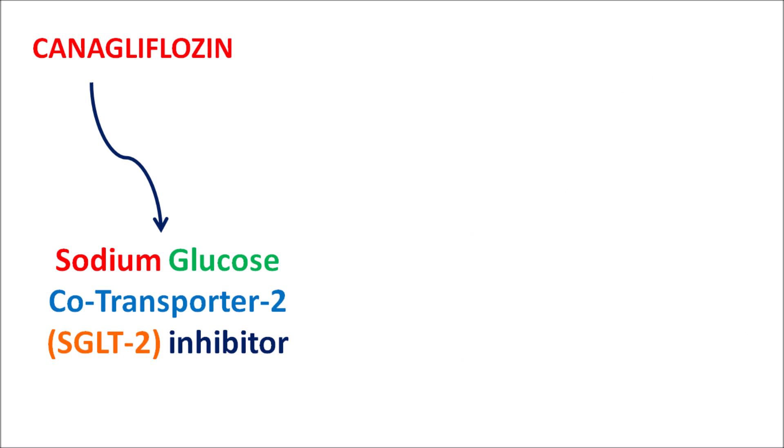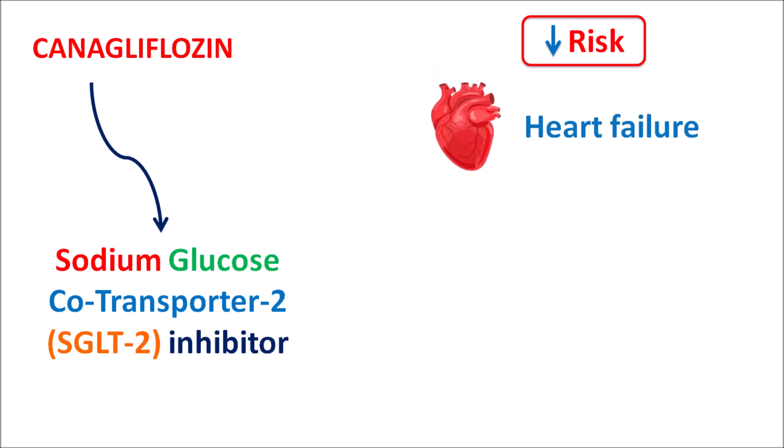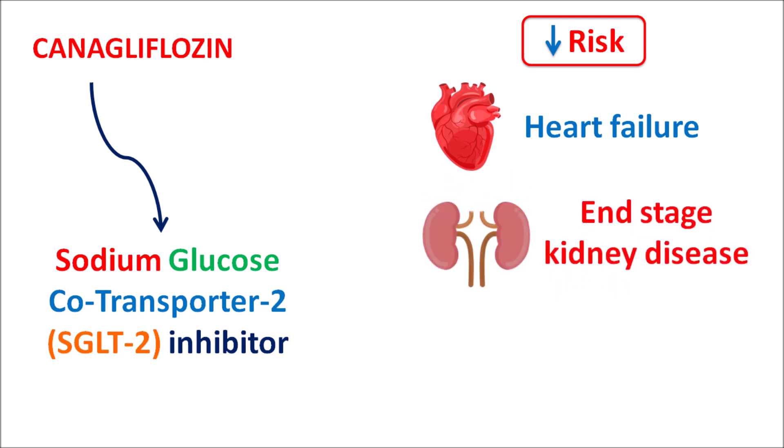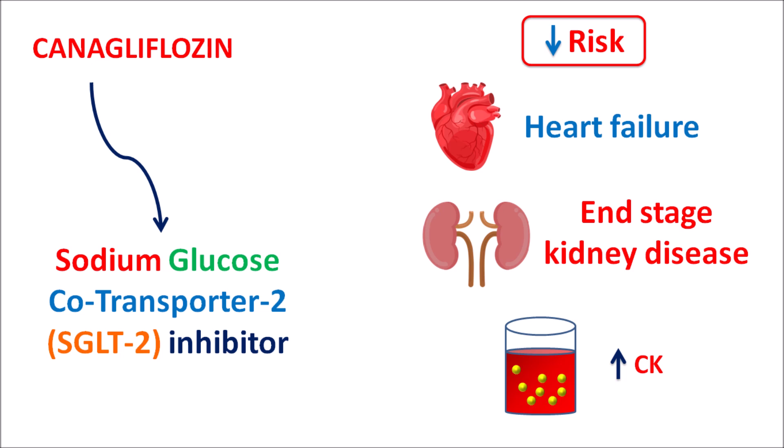Canagliflozin can decrease the risk of various systemic complications associated with diabetes mellitus. This drug can be used in diabetic patients who have increased risk of heart failure, increased risk of stroke, and heart-related death. In such patients, canagliflozin can reduce the risk by increasing glucose excretion. Similarly, this drug can be used in patients with end-stage renal disease, where renal functionality can be improved by better glycemic control, reducing creatinine levels. So this drug decreases the risk of cardiovascular and renal disorders and can also reduce hospitalization.